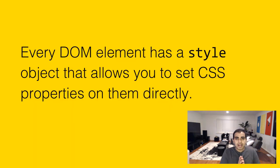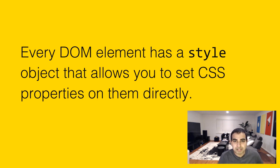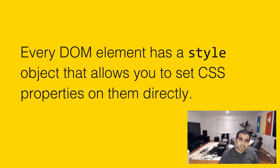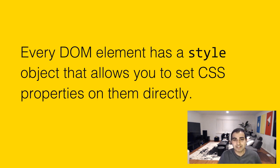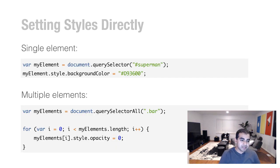When it comes to styling an element directly, every DOM element you'll ever run into will have a style object. This style object allows you to set CSS properties on whatever element you're affecting, just like you would have done in CSS, but using a JavaScript-y syntax. And the way it looks is as follows.